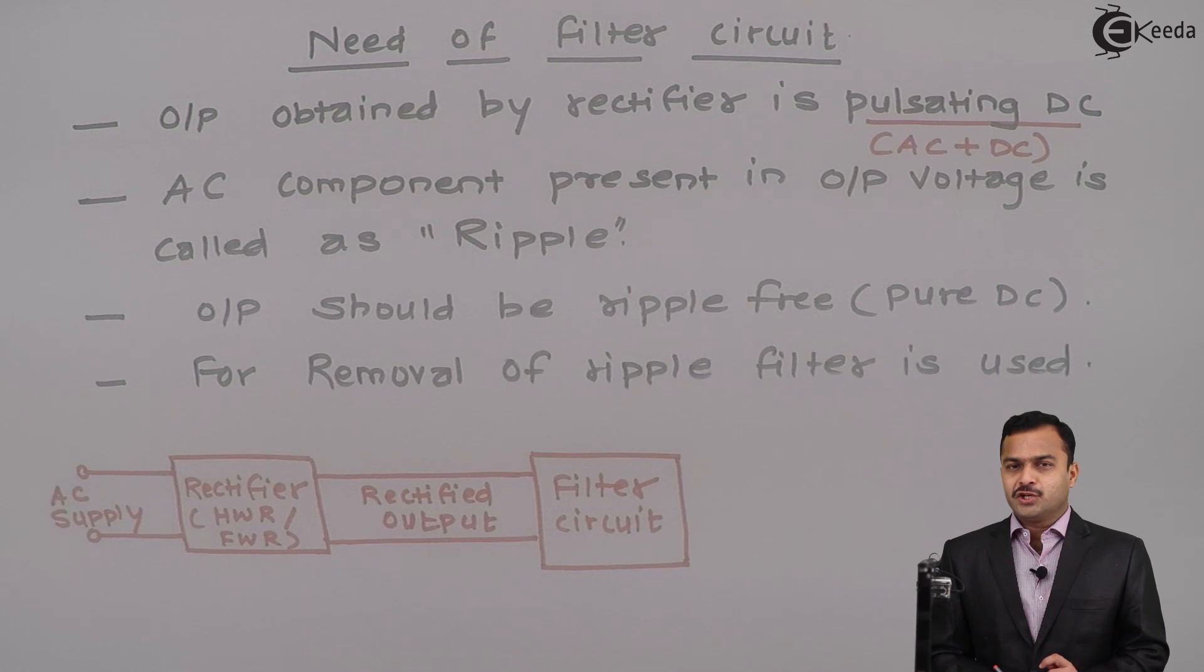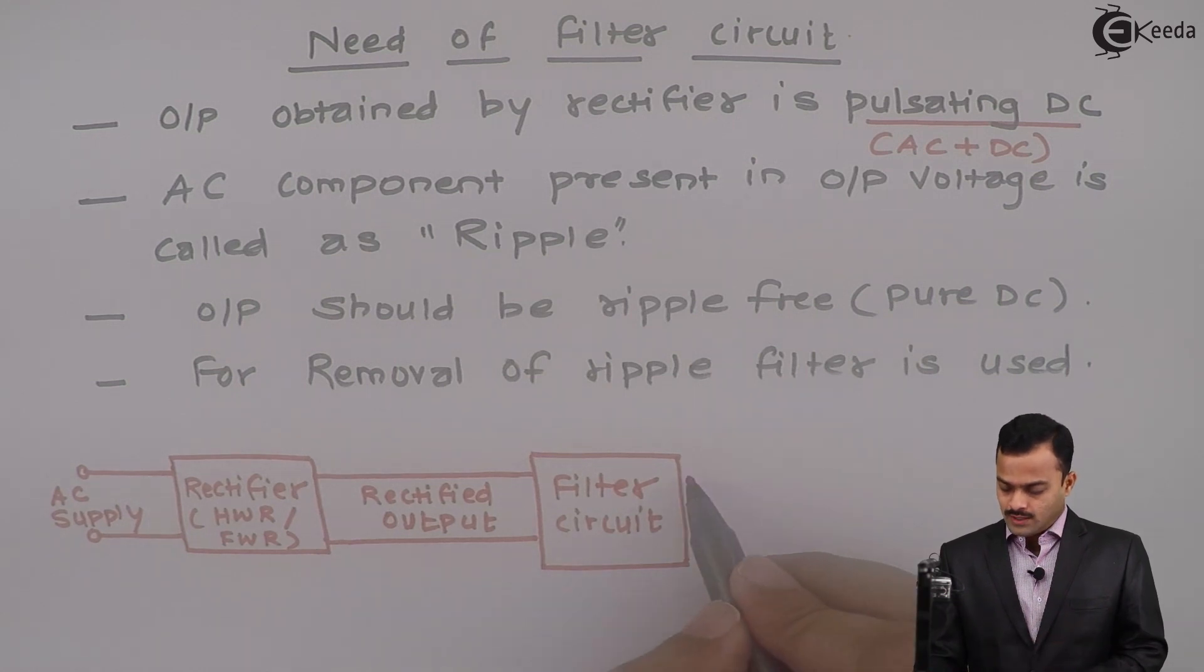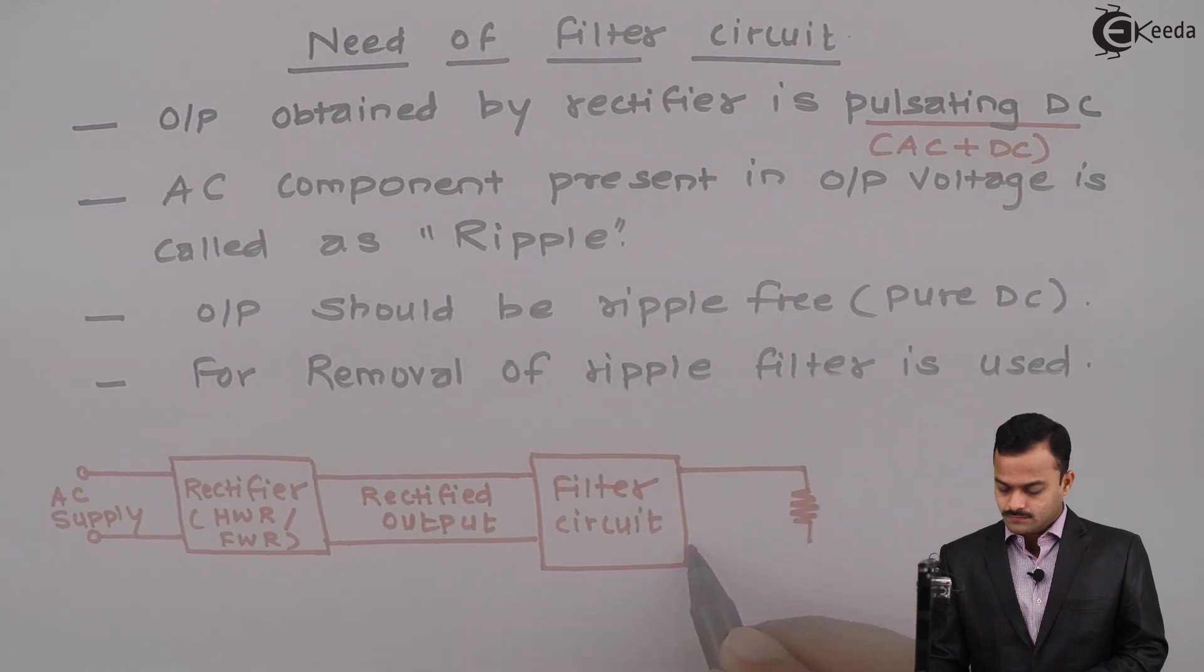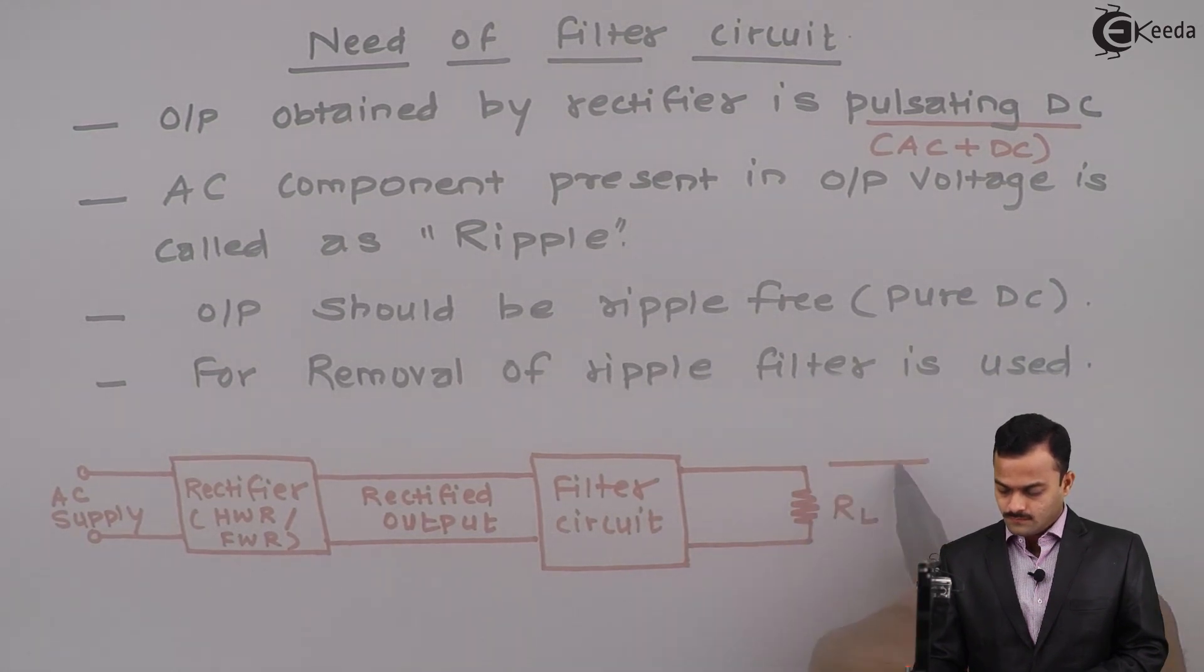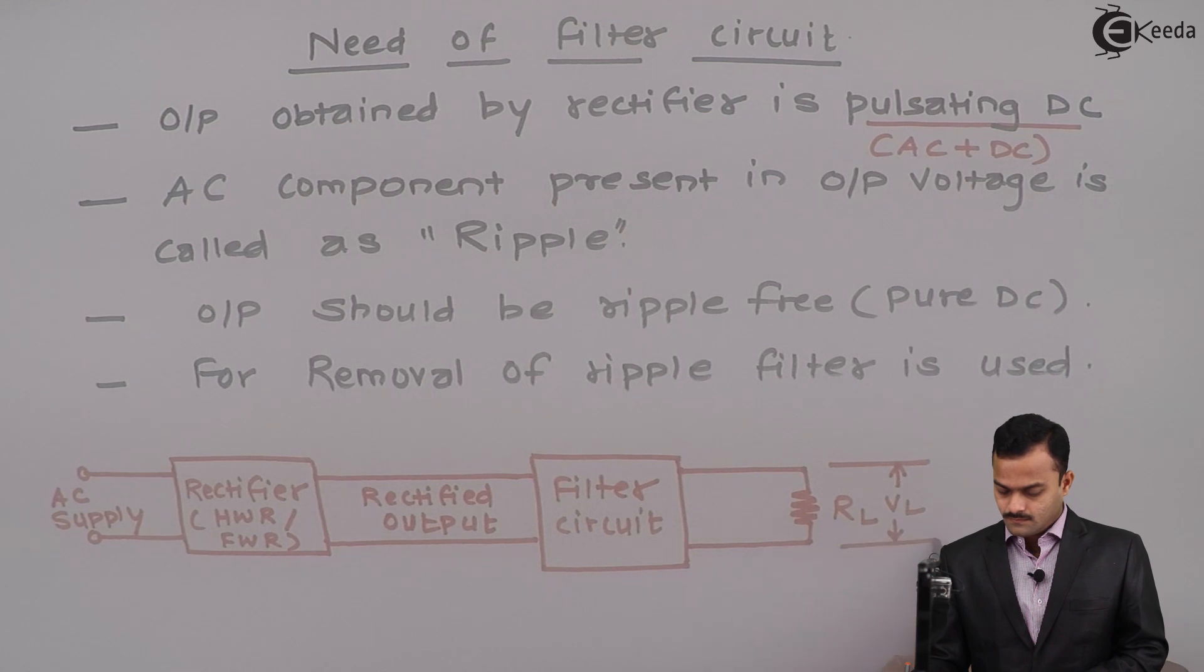Filter circuit makes sure that all AC components or maximum AC component has been removed. Whatever left is the pure DC that will pass through a load. The output over here is pure DC.